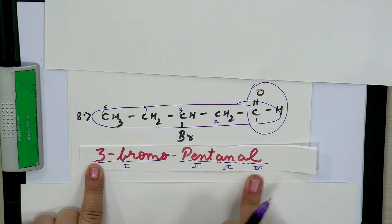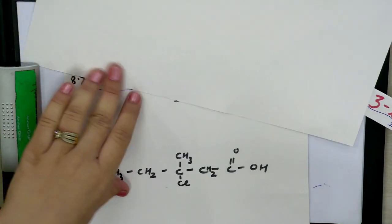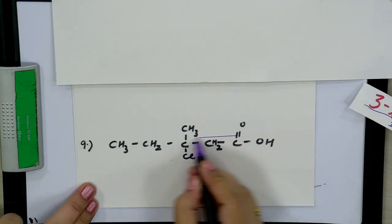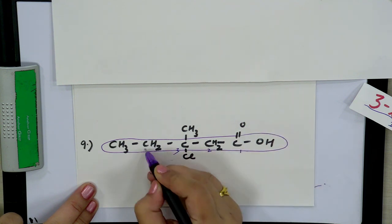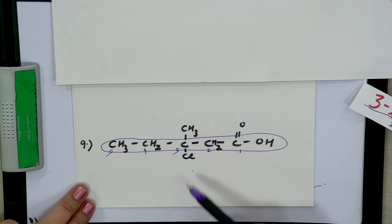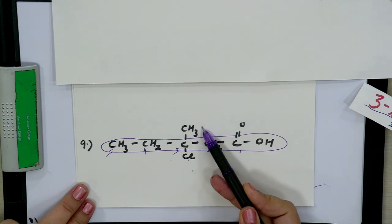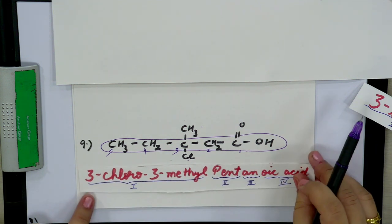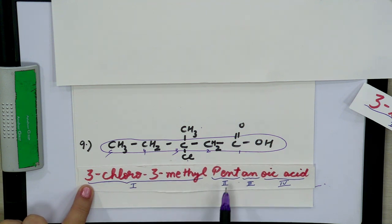When multiple substituents are present — such as a CH₃ group, Cl, and a functional group — simply identify the longest carbon chain, number it with priority to the functional group, and then name the prefixes in alphabetical order. Since 'C' (chloro) comes before 'M' (methyl) alphabetically, write chloro first, then methyl. Specifying the position of each is essential. The complete name becomes 3-chloro-3-methylpentanoic acid.